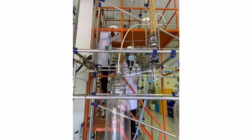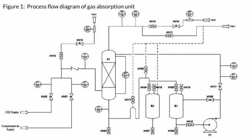The pressure controller is used to measure the pressure drops in the absorption column. The composition analyzer is used to measure or analyze the exit gas carbon dioxide and the inlet gas carbon dioxide. Figure 1 shows the process flow diagram of the gas absorption column.